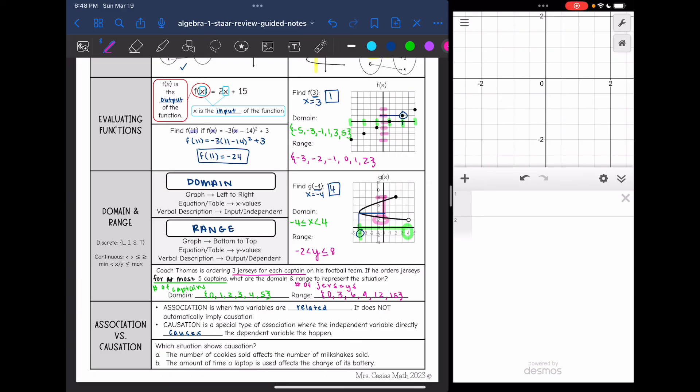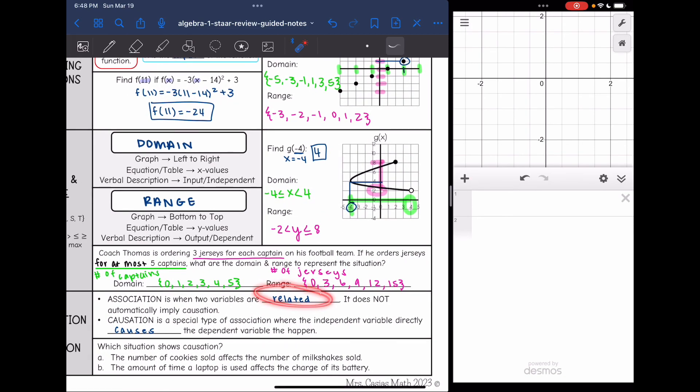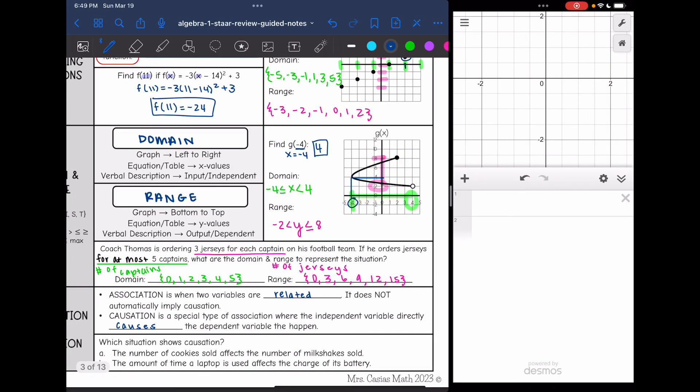Last thing we need to talk about is association versus causation. This is just a specific type of relationship. So association is when two variables are related. It does not automatically imply causation. Causation is a special type of association. So two related things, but the independent variable will directly cause something in the dependent variable to happen. So this last question says, which situation shows causation? A says the number of cookies sold affects the number of milkshakes sold. Those might be related if they're selling them at the same store, but I wouldn't say that cookies, you can't prove that cookies sold is going to affect the number of milkshakes sold. So that's association.